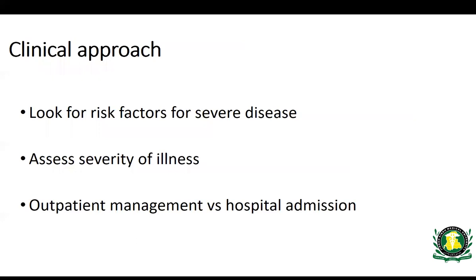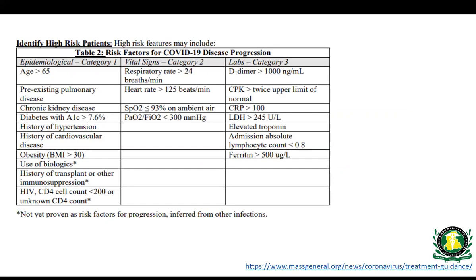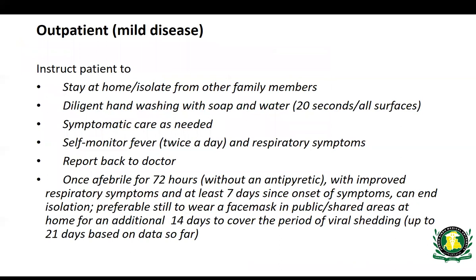For clinical approach: look for risk factors for severe disease, assess how sick the patient is (mild, moderate, severe, critical), and determine if you can manage them outpatient or need to bring them in. For a patient with mild disease — an otherwise healthy person complaining only of dry cough and fever with no shortness of breath — that patient can and should stay home, isolate from family members, do frequent handwashing, and monitor temperature and respiratory symptoms, reporting back in a few days.